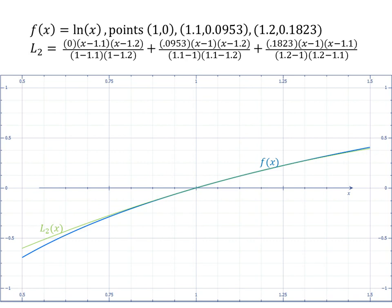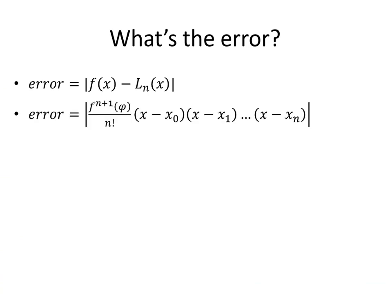In this case, the Lagrange polynomial actually looks like it's a very good approximation of f(x). But how accurate is it? Well the error is our original function subtracted by the Lagrange polynomial for all x's. And if we do some fancy math, we're able to come up with this formula.